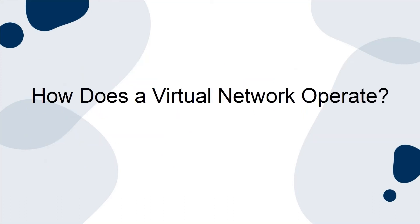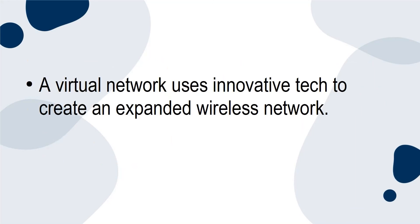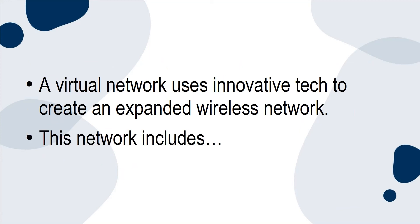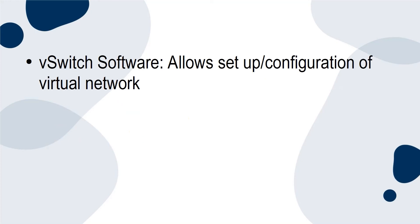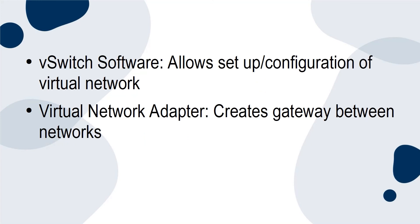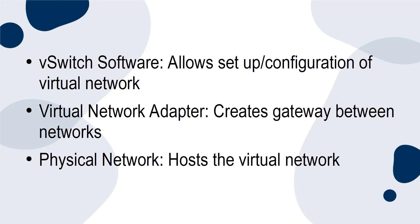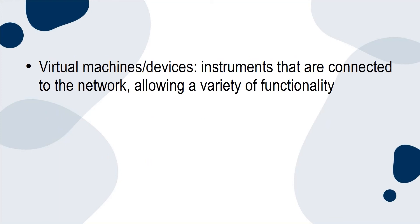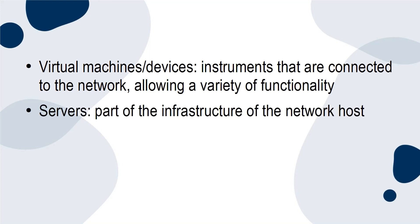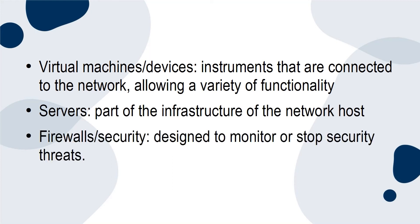How does a virtual network operate? A virtual network uses innovative tech to create an expanded wireless network. This network includes: vSwitch software, which allows setup and configuration of a virtual network; a virtual network adapter, which creates a gateway between networks; a physical network, which hosts the virtual network; virtual machines and devices, which are instruments connected to the network allowing a variety of functionality; servers, which are part of the infrastructure of the network host; and firewalls and security, designed to monitor and stop security threats.